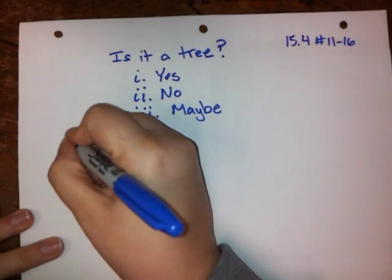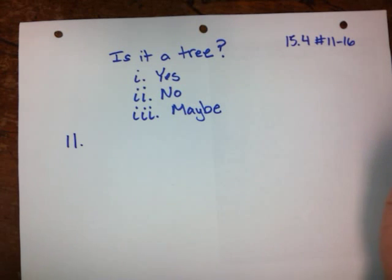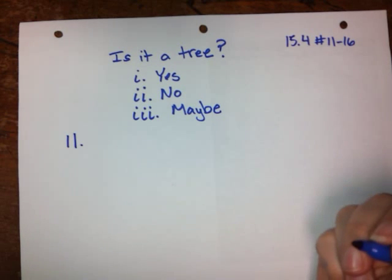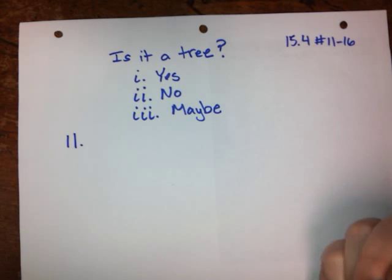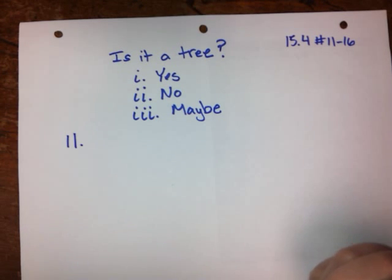Number 11 says the graph has five vertices and there is exactly one path from any vertex to any other vertex.